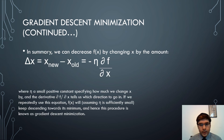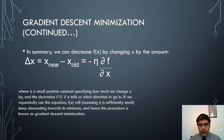In summary, we can decrease F(X) by changing X by the amount: ΔX = X_new − X_old = −η * (∂F/∂X), where η is a small positive constant specifying how much we change X by, and the derivative ∂F/∂X tells us which direction to go. If we repeatedly apply this equation, F(X) will keep descending towards its minimum. This procedure is known as gradient descent minimization, and we will use this algorithm in many of the models we will be discussing.